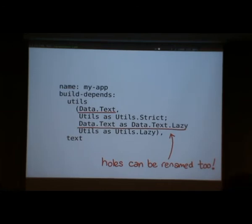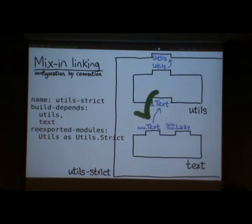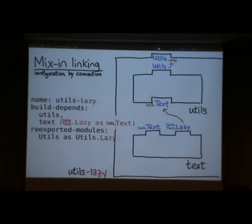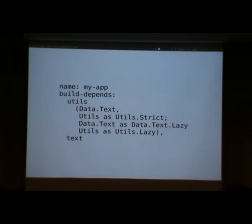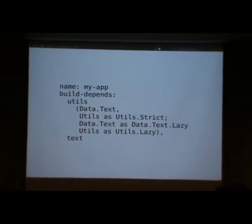Question: is this equivalent to just importing utils-strict and utils-lazy as shown before? Yes. To do that locally, you'd create a utils package, build it twice, and re-export it as a new utils that had that export in it — those were the utils-lazy and utils-strict packages. You could also do it in one package and re-export utils.strict and utils.lazy. You'd build a package that just had that utils, and then app could include utils-both. And the reexported-modules syntax can list all the modules you want to export automatically.